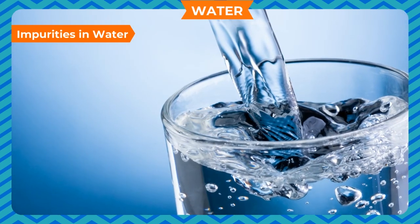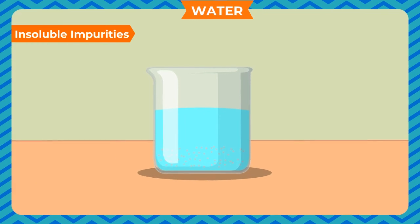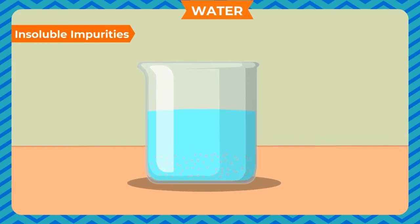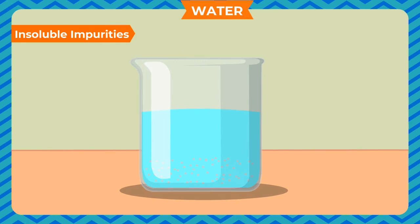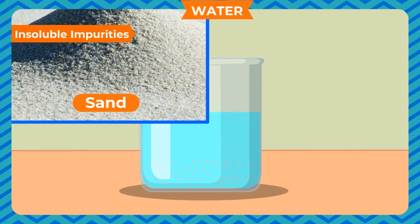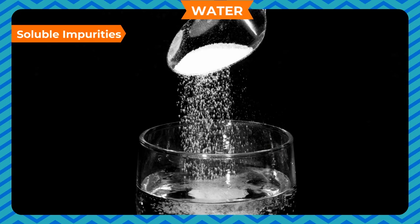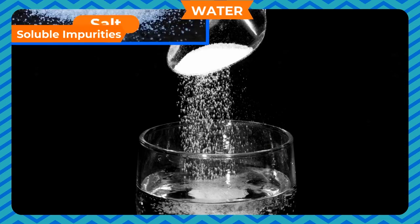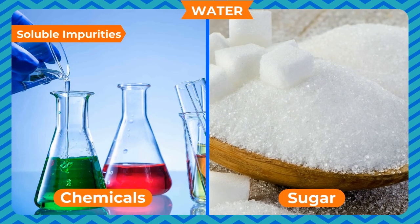Impurities are of two types: insoluble impurities, which do not dissolve in water — for example sand, dust, and mud — and soluble impurities, which dissolve in water — such as salt, sugar, and chemicals.